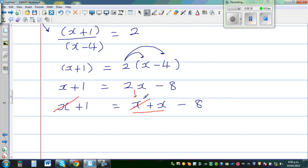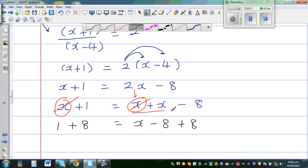So what remains? This is 1. I'm going to add 8 to both sides. So 1 plus 8 equals x minus 8 plus 8. Minus 8 and plus 8 gets cancelled.